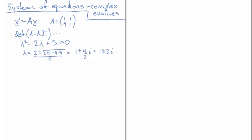I'll call lambda 1 equal to 1 plus 2i. Because we're dealing with a real matrix, we know that the eigenvalues always come in complex conjugate pairs, so lambda 2 is just the conjugate. Moreover, the eigenvectors will also be complex conjugates of each other, so let's just find the eigenvector for lambda equal to 1 plus 2i.